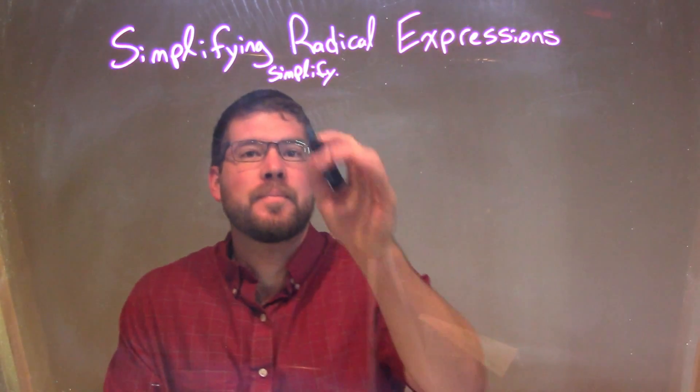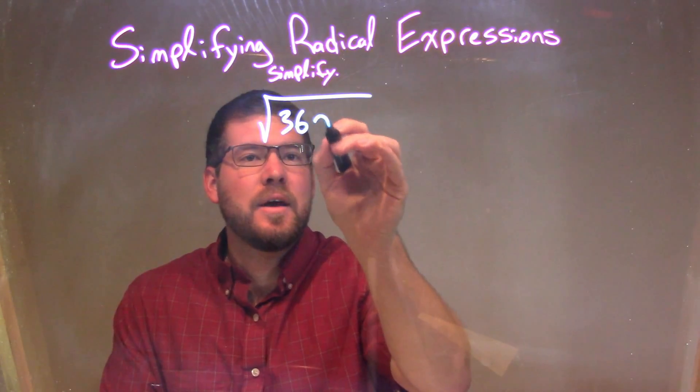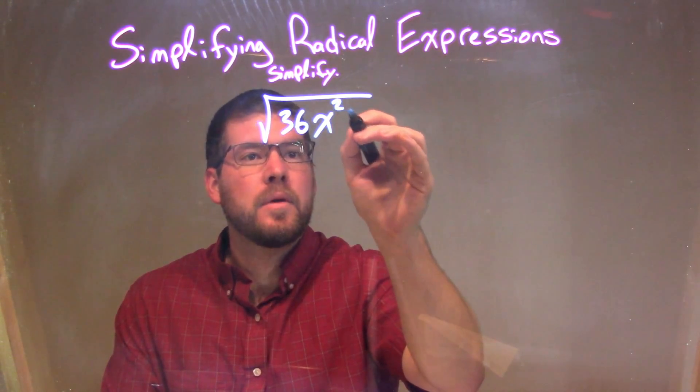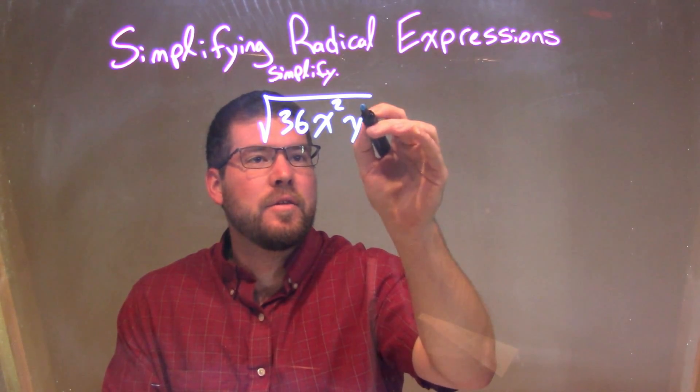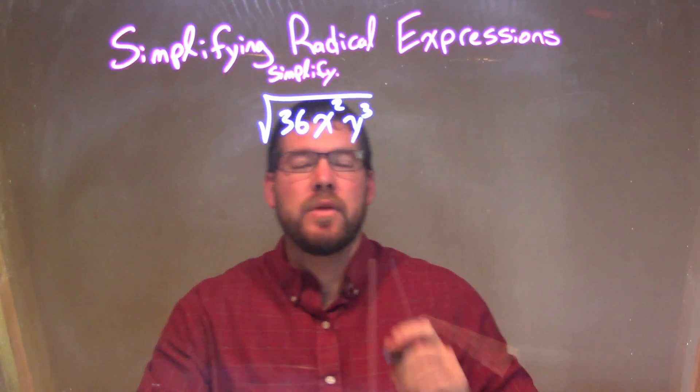So if I was given this problem, the square root of 36 x squared y to the third, and that's all in the square root, we need to take our prime factorization on this.